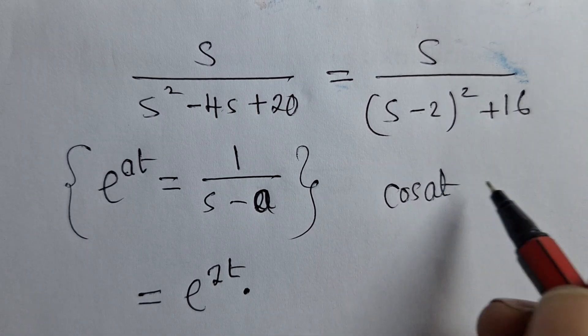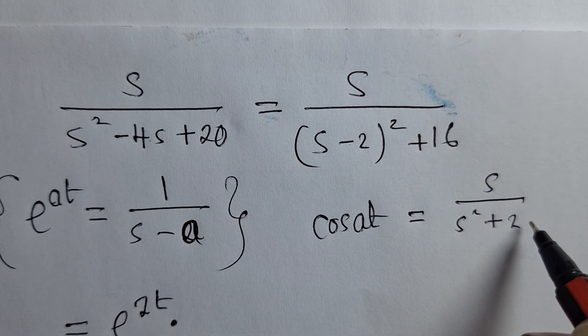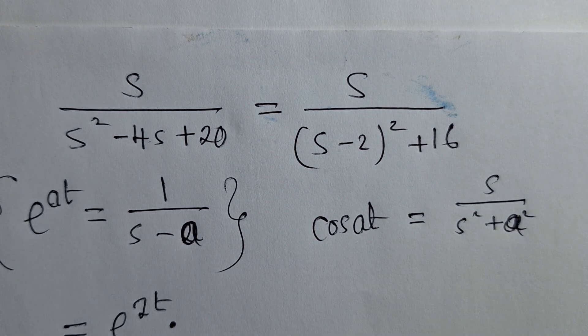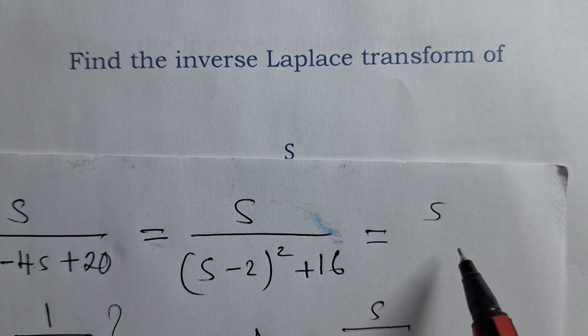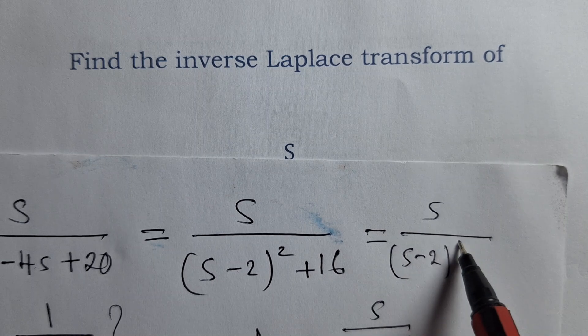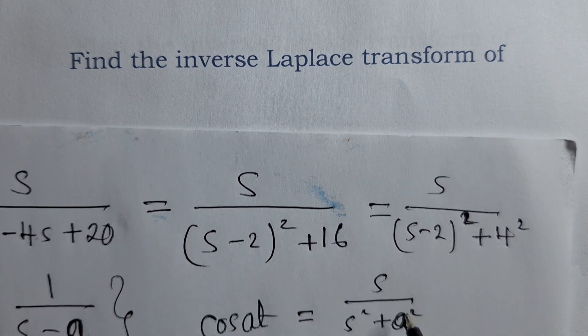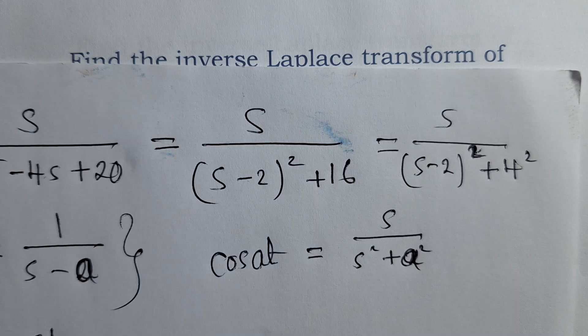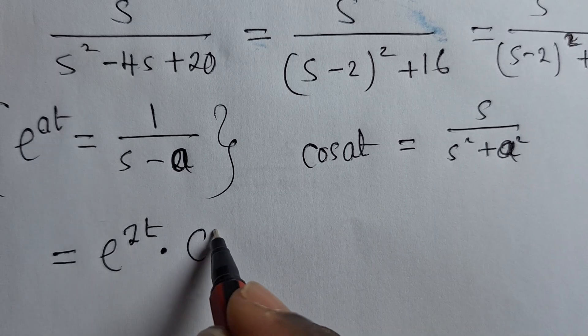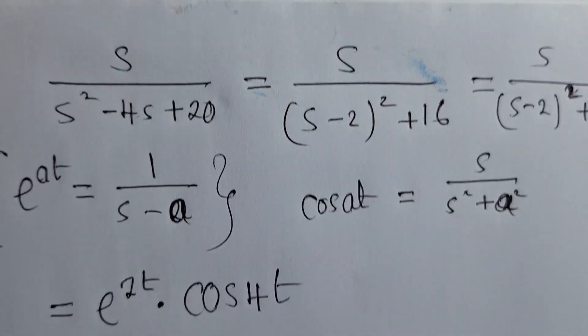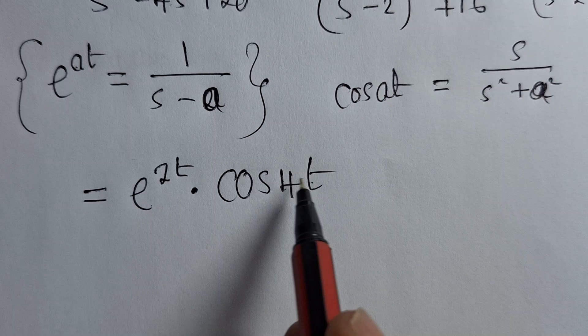The next property we said, when you've got cos at, this is equal to S over S squared plus a squared. Now, if you can see nicely what is here, if we write, or if we want, we can write this as equal to S over S minus 2 squared plus 4 squared. Because we want to have the squares, like it is here, power 2, power 2. So there is a power 2 here and a power 2 there. Therefore, we can say this is giving us a cos 4t. Remember this property. What is here must be found here. And this is what we have right here.